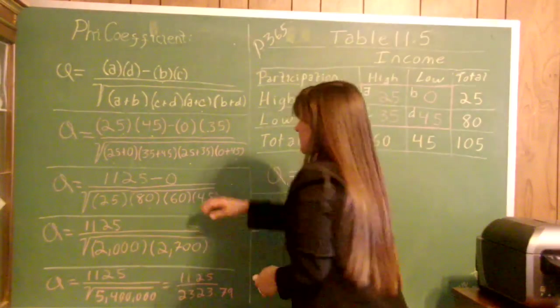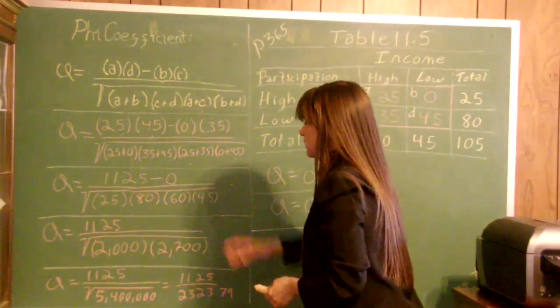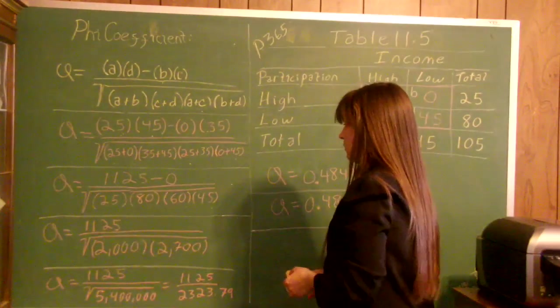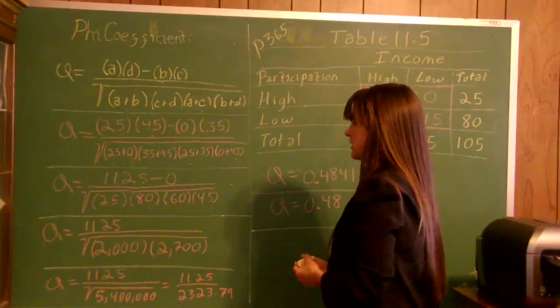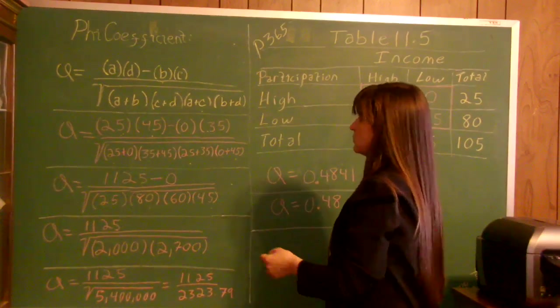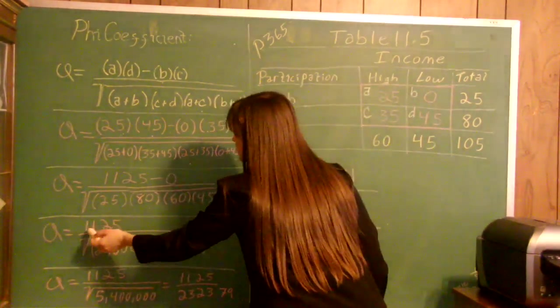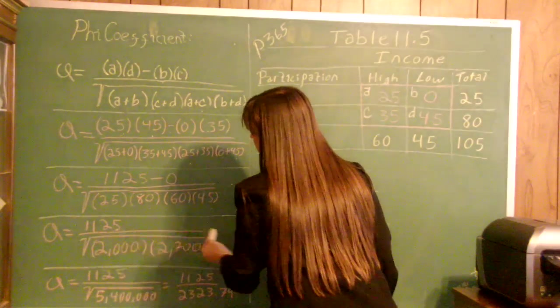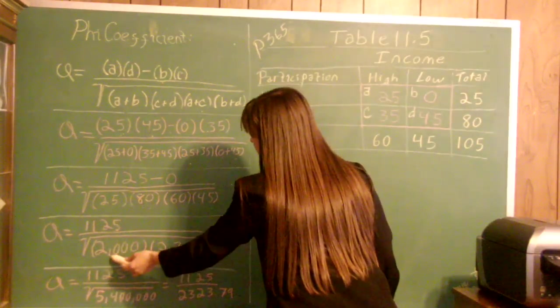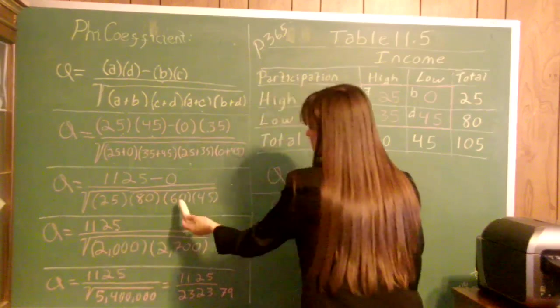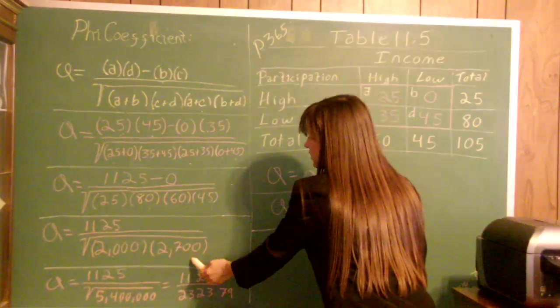Your textbook doesn't show as many steps as I'm showing, but it's good to show your professor all your work in case you have a mathematical error. They can see that you understand the concept. So V equals 1,125 over—you multiply 25 times 80 to get 2,000, and then 60 times 45 equals 2,700.